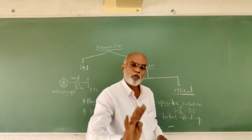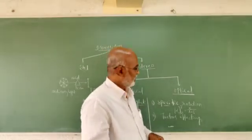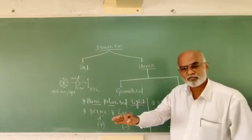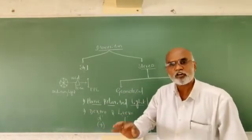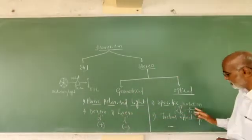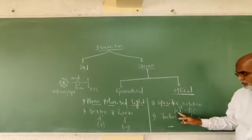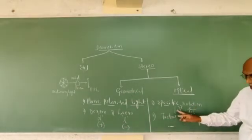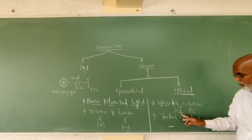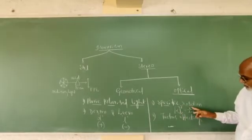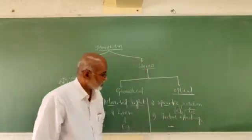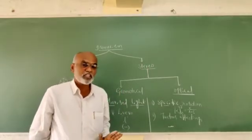Taking these four important factors, specific rotation is defined as the angle of rotation caused by an optically active compound with a solution concentration of 1 gram per cm³, a solution length of 1 decimetre, for a given wavelength at constant temperature. It is denoted by the mathematical equation [α]λ_T, where alpha is the specific rotation, lambda is the wavelength, T is the temperature, l is the length of the solution, and c is the concentration of the solution.